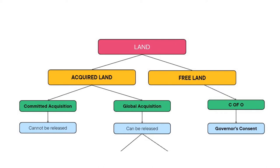Subsequent owners who buy that land would have to, if they want the title in their personal name, perfect the title to Governor's Consent. Now, a C of O cannot be issued twice. A C of O can only be issued to the first owner of the land to register it with the government. Once the land is transferred from one hand to another, the other parties must apply for the Governor's Consent. So, freehold land is very straightforward: C of O and then Governor's Consent.